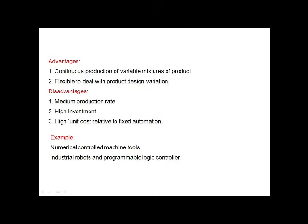Advantages of programmable automation: continuous production of variables, mixture of products, flexible to deal with product design variations. Disadvantages: medium production rate, high investment, high unit cost relative to fixed automation. Examples of programmable automation include numerical controlled machine tools, industrial robots, and programmable logic controllers.